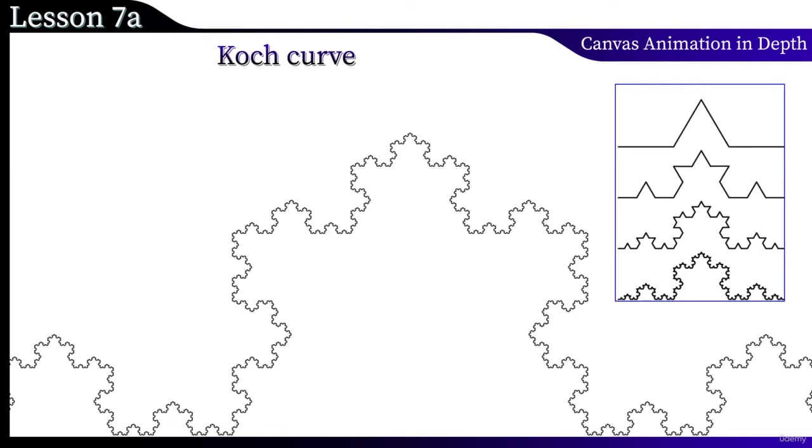At the next iteration, each segment is divided into three parts. And the middle part is replaced by an equilateral triangle, with a side length equal to one third of the original segment.